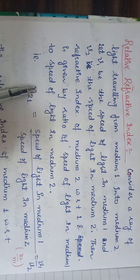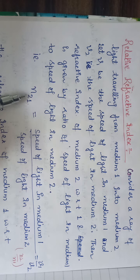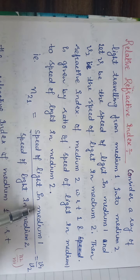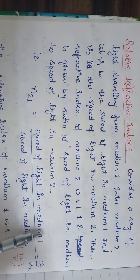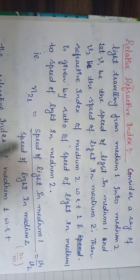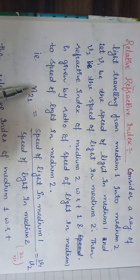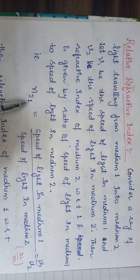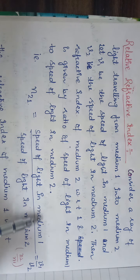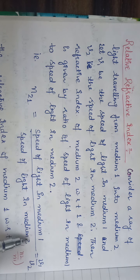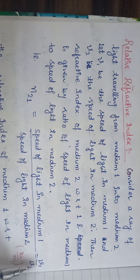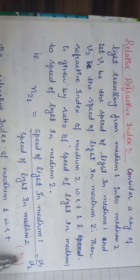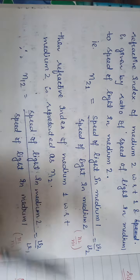Then the refractive index of medium two with respect to medium one is given by the ratio of the speed of light in medium one to the speed of light in medium two. We write it as n₂₁ — meaning the refractive index of medium 2 with respect to 1. Medium one goes in the numerator and medium two in the denominator. So n₂₁ equals v1 upon v2, or in terms of refractive indices, n2 upon n1.